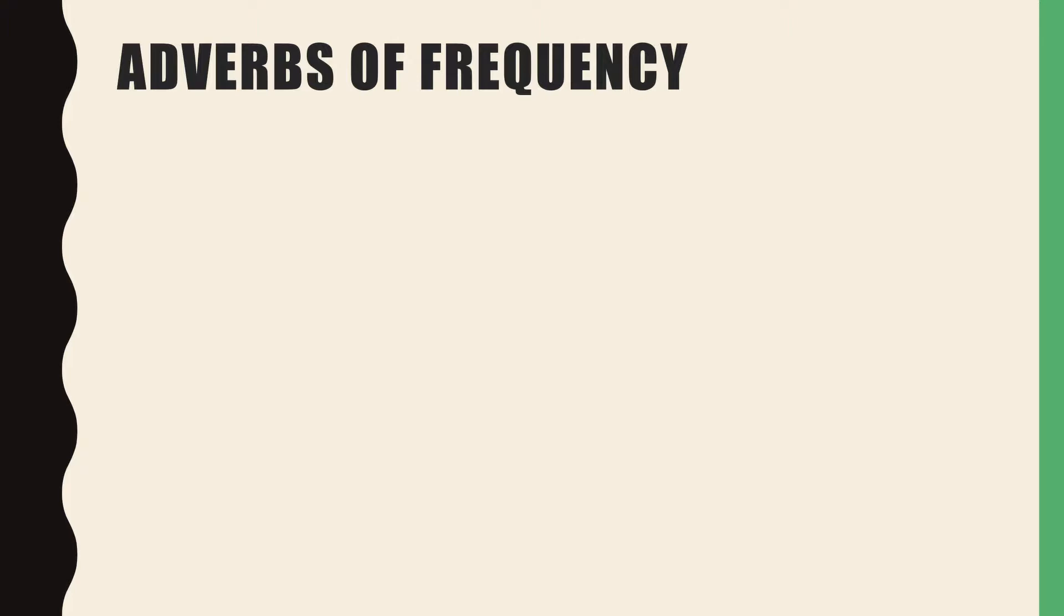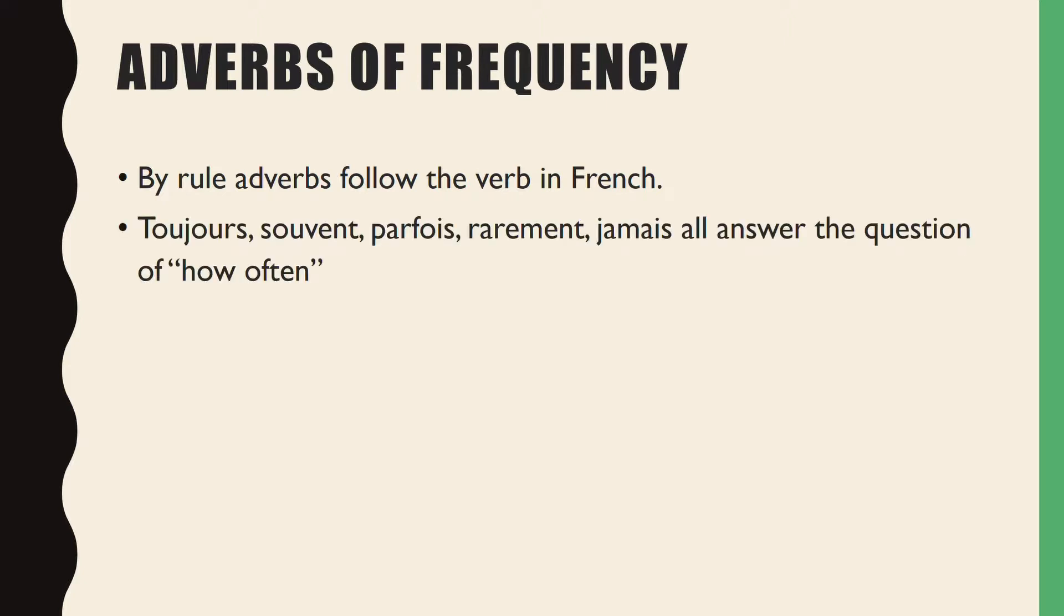Then you have your adverbs of frequency. So things like trop, assez, un peu tell you how much. Frequency tells you how often. Again, by rule, adverbs follow the verb in French. Toujours, souvent, parfois, rarement, jamais are all things that answer that question of how often. Toujours means always, souvent means often, parfois means sometimes, rarement means rarely, and jamais means never. It's like a Likert scale of how often you do something. How often do you work? Je travaille parfois or je travaille toujours. I know a lot of you are working all of the time, so you'd say je travaille toujours.